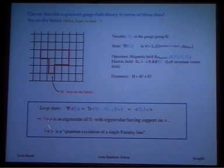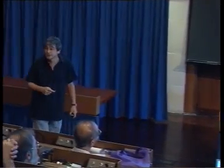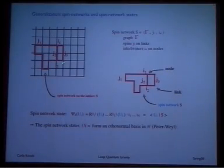Now, these loops, this loop states by themselves do not form a basis in the Hilbert space, but a simple generalization of the same object does. And these are the so-called spin networks. You take a spin network as a graph on the lattice here, colored with some representations on the graph links, representations of the gauge group and some intertwiners, some invariant tensors associated to the nodes.